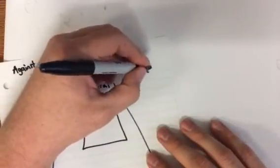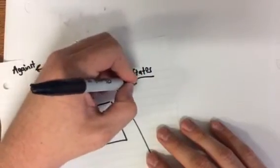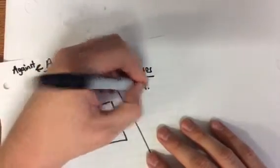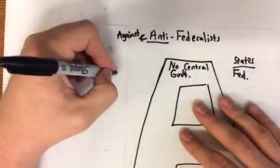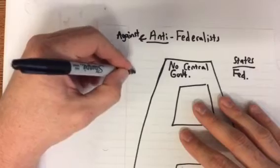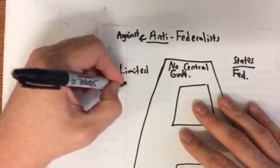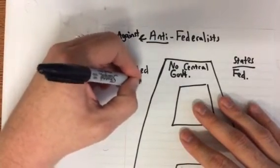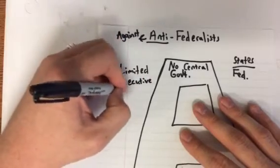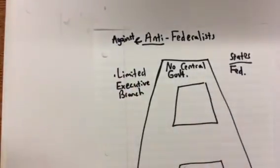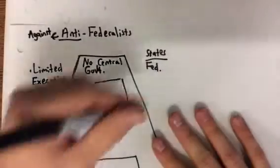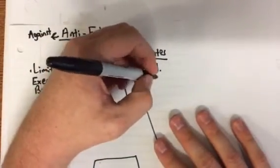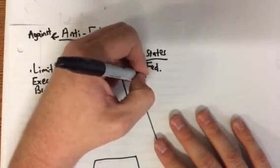They liked it under the Articles of Confederation where the central government was very weak. They believed it should be like this fraction: states over federal government. They wanted to make sure that the states had more power than the federal government. They wanted a limited executive branch — that means the president would be very limited in the power he had — and states were very powerful.